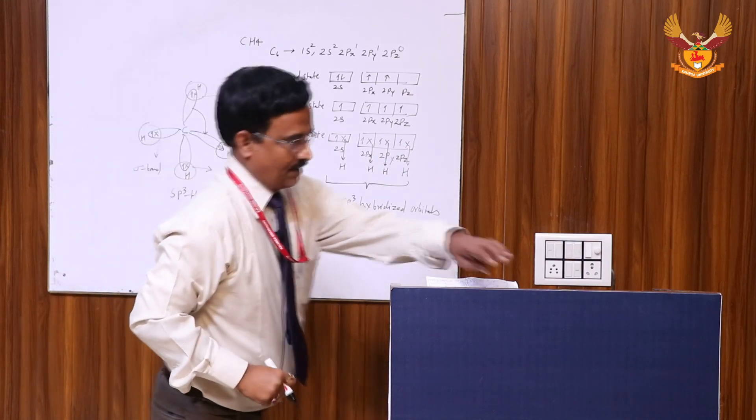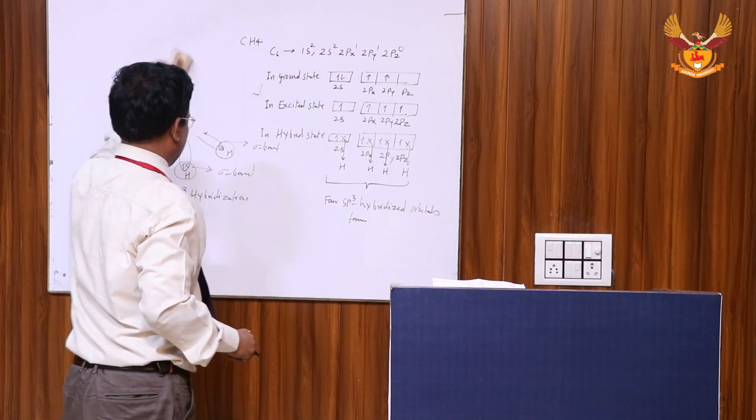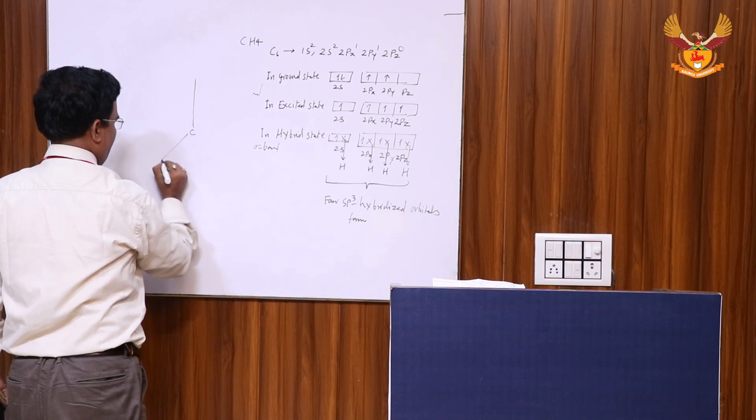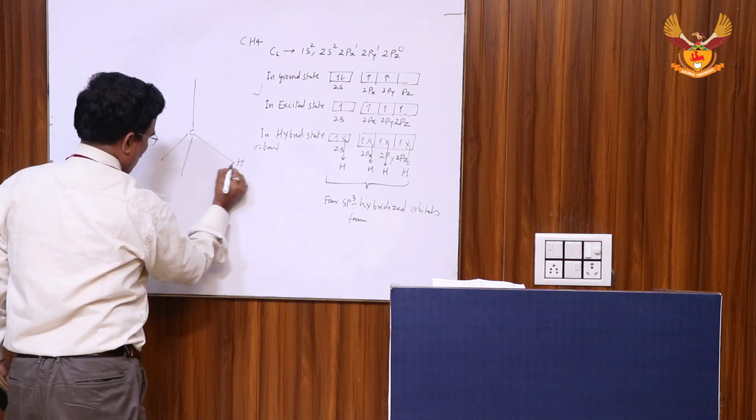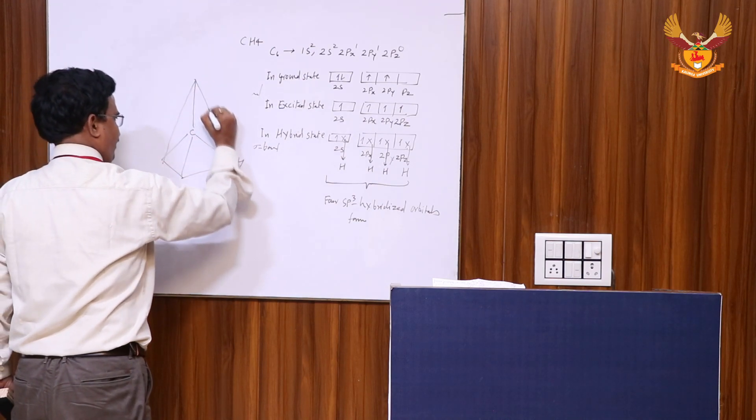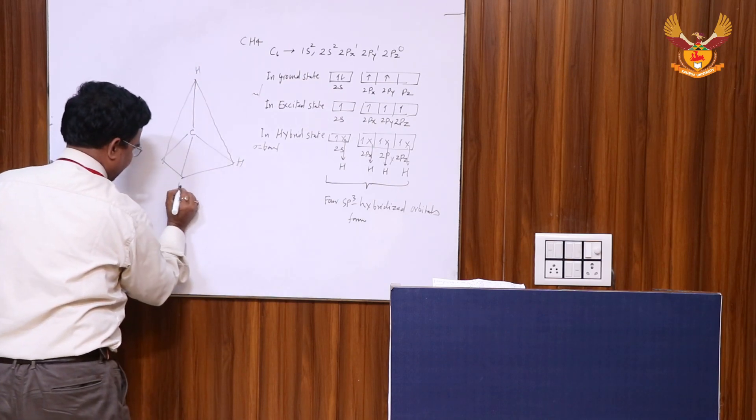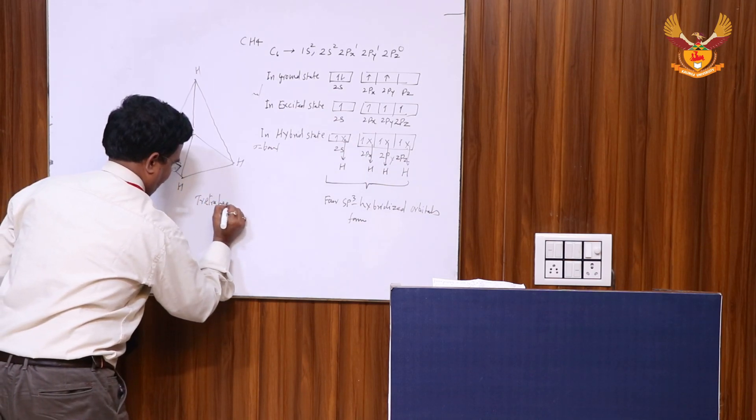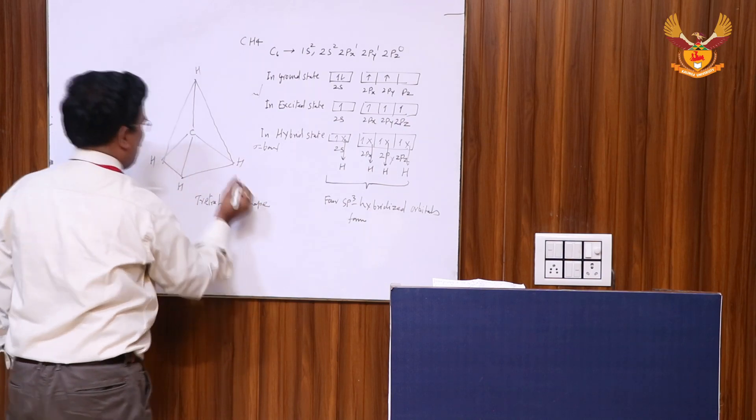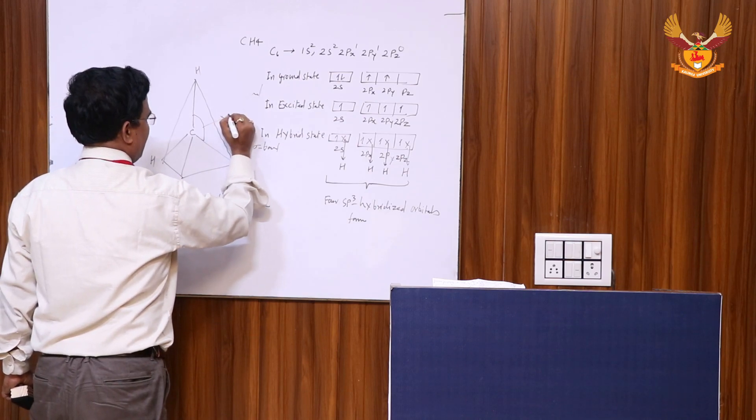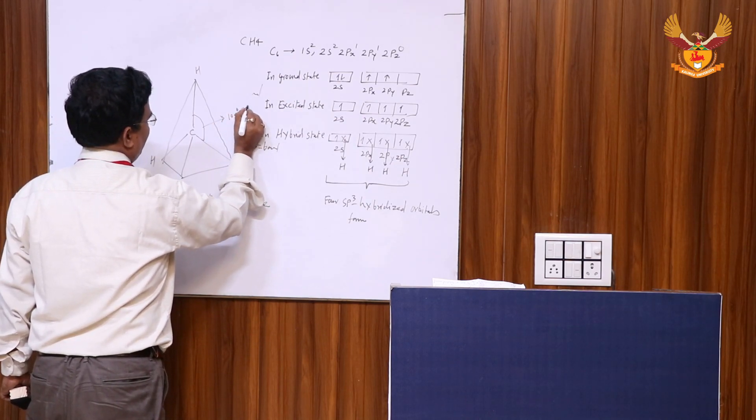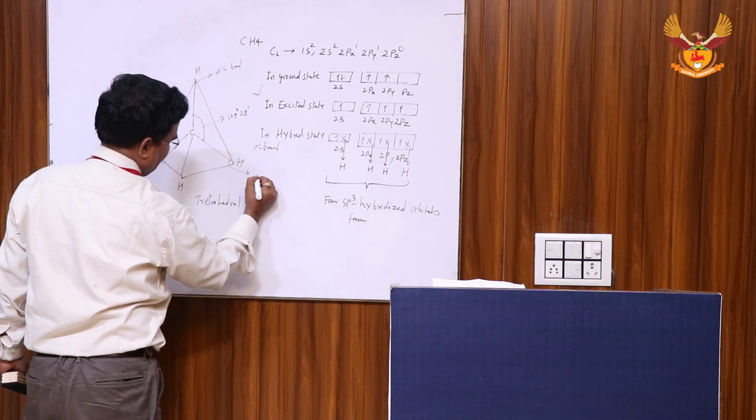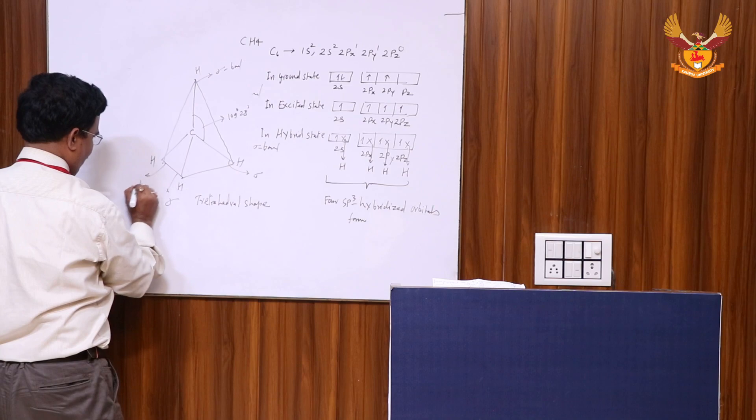The shape and structure of sp3 hybridization is tetrahedral. The angle between the two adjacent atoms is 109 degrees 28 minutes. This is the sigma bond, and this is the second, third, and fourth sigma bond.